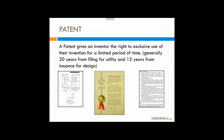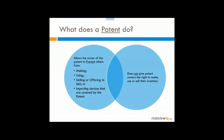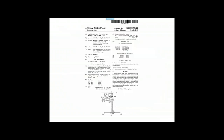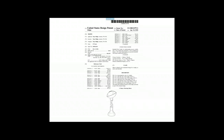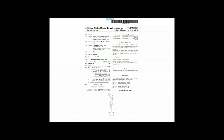A patent gives an inventor the right to exclusive use of their invention for a limited period — generally 20 years from the filing of a utility application and 15 years from issuance of a design patent. It allows the owner to prevent others from making, using, selling, or importing devices covered by the patent, but does not give the patent owner the right to make or sell their own invention. In your industry, examples include a utility patent for a threadable heat transfer press, and design patents covering trophy designs.